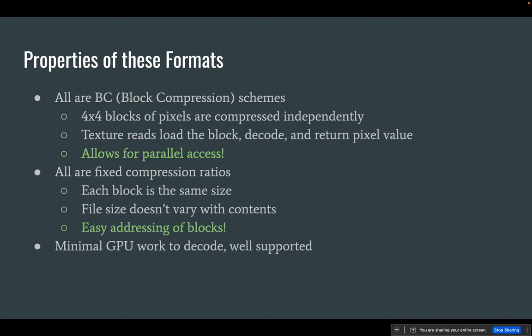All of these formats are block compression schemes, which means that a 4×4 block of pixels is compressed independently. When your GPU wants to read a pixel value it has to grab a block of pixel data, decode it, and then do its pixel read and filtering from that result. This is good because the blocks are all the same size — you can do very simple arithmetic to determine the memory address of the block you're about to sample from and find it right away. Since there's a fixed compression ratio, they're all the same size, which is good for parallel access. The GPU work to decode these is relatively simple compared to JPEG, though some formats get a little complex with lots of modes.